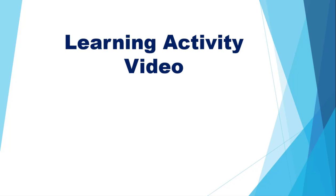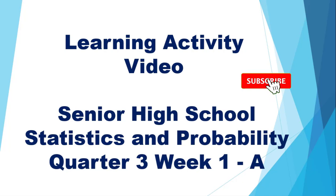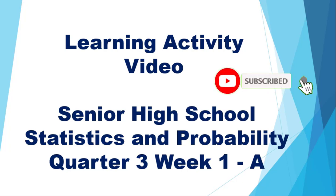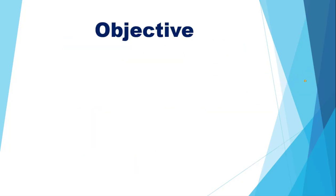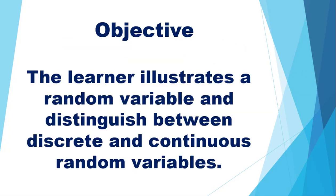Hi everyone! Welcome to our learning activity video for Senior High School Statistics and Probability, Quarter 1, Week 1, A. For the objective, the learner illustrates a random variable and distinguishes between discrete and continuous random variables.